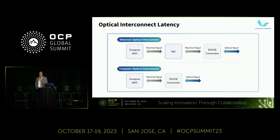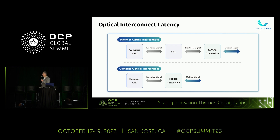In the data center today, RDMA is the dominant interconnect protocol used for remote memory applications. The problem is the latency incurred — there's FEC, there's going through the NIC. Versus CXL, which is low latency. What's needed to have CXL match RDMA's capabilities is an optical interconnect residing on CXL.